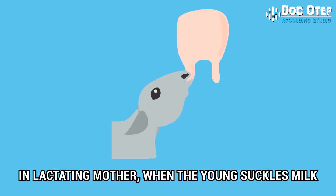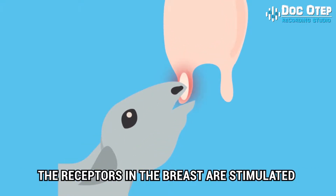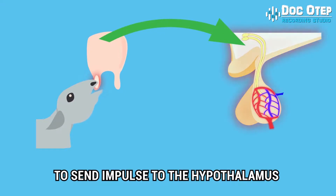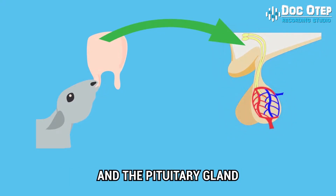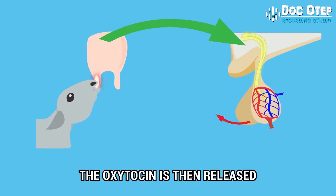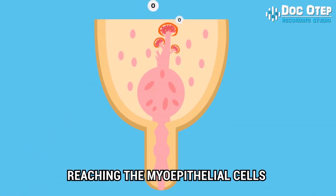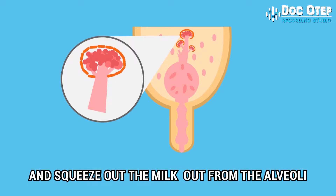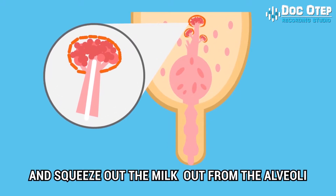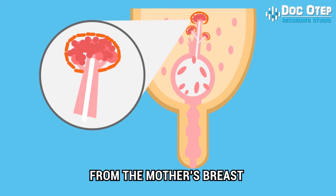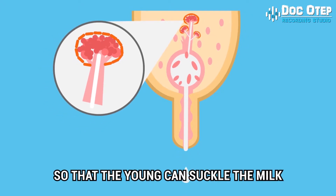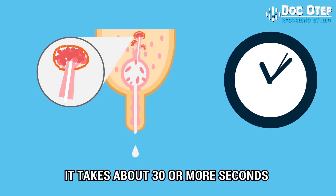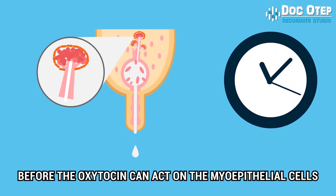In a lactating mother, when the young suckles milk, receptors in the breast are stimulated to send impulses to the hypothalamus and pituitary gland. Oxytocin is then released, reaching the myoepithelial cells of the mammary alveoli, creating cascades of intracellular events that cause the cells to contract and squeeze milk from the alveoli, allowing milk to flow out for the young. It takes about 30 or more seconds after the first moment of suckling before oxytocin can act on the myoepithelial cells.